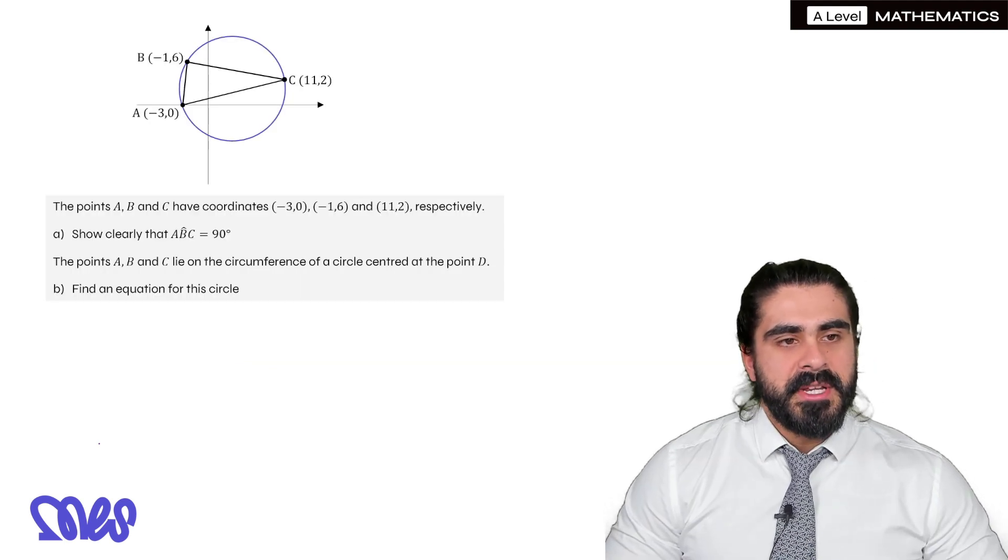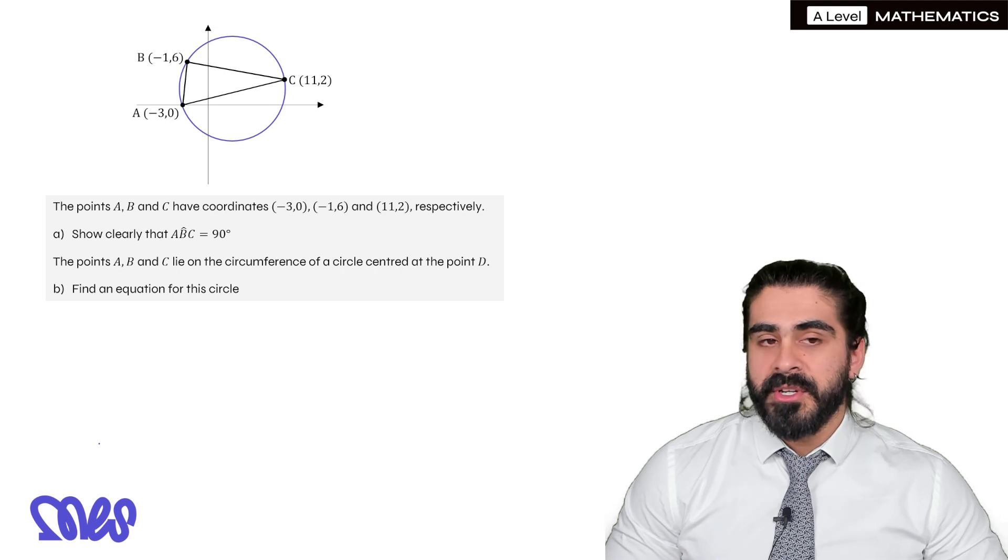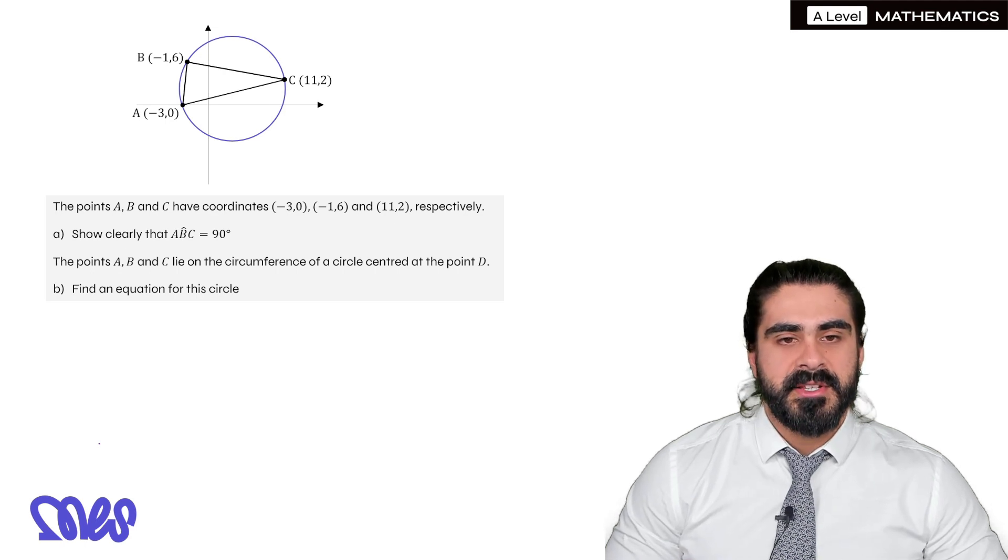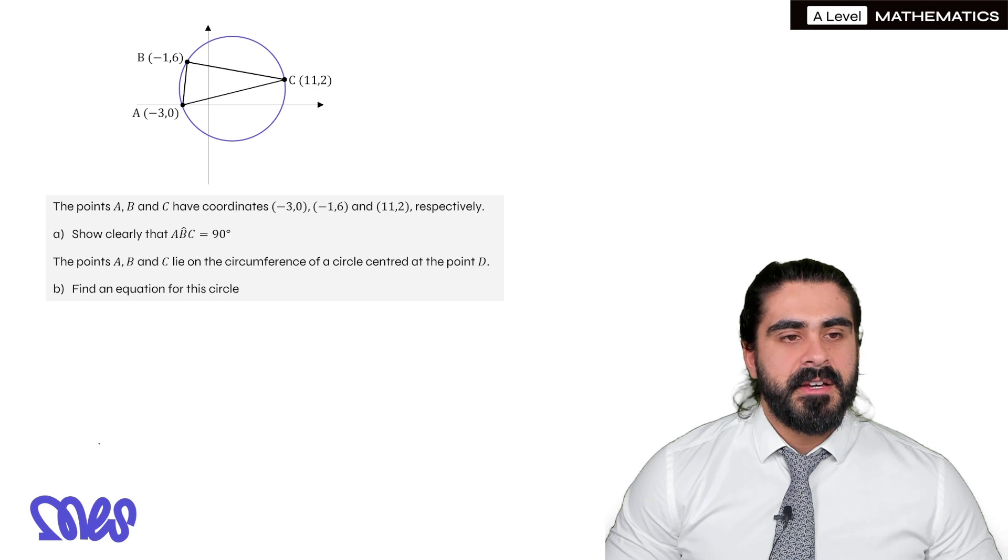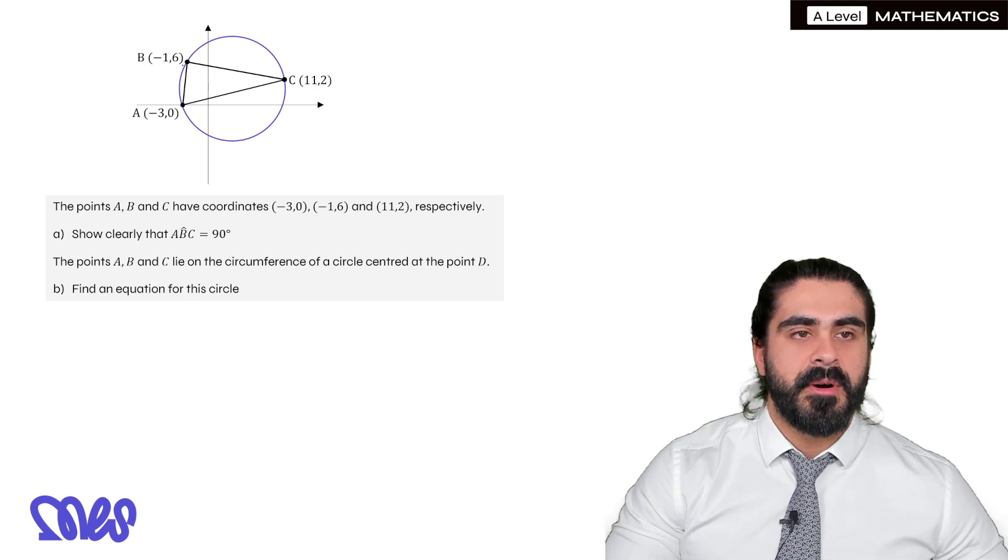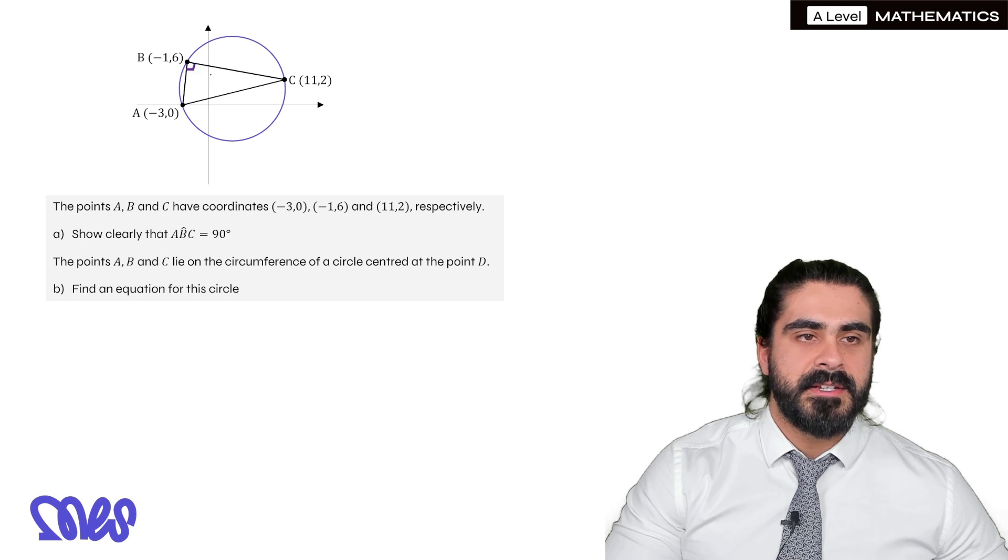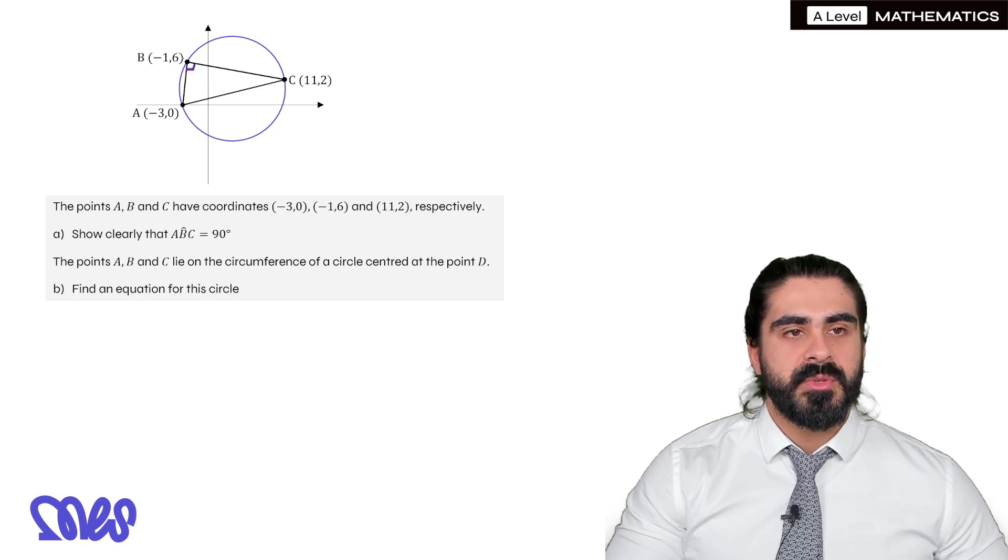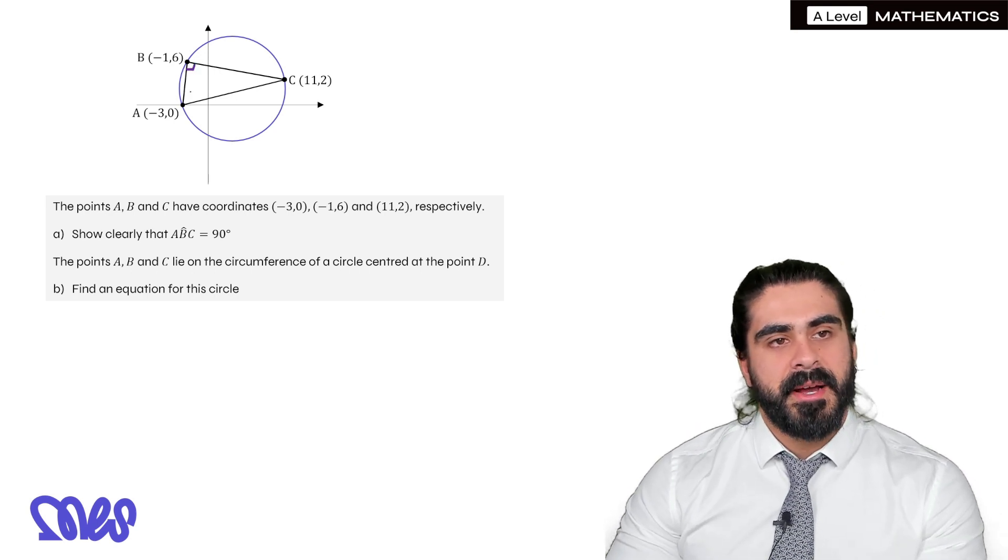Question one says the points A, B and C have coordinates minus 3, 0, minus 1, 6 and 11, 2 respectively. Show clearly that angle ABC is 90 degrees, meaning the angle up here. Well the easiest way to show that is by the gradients.